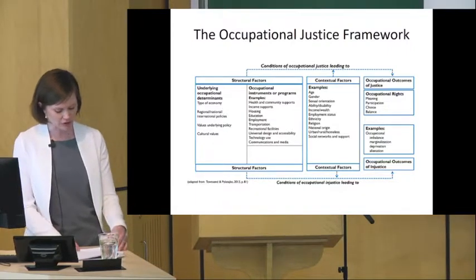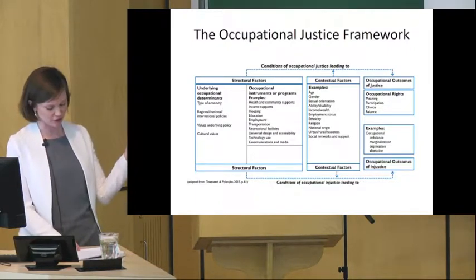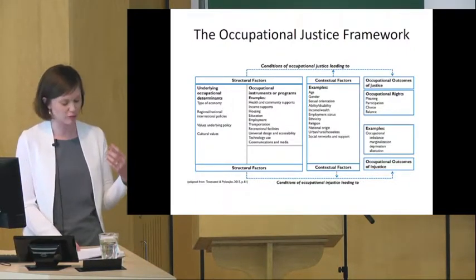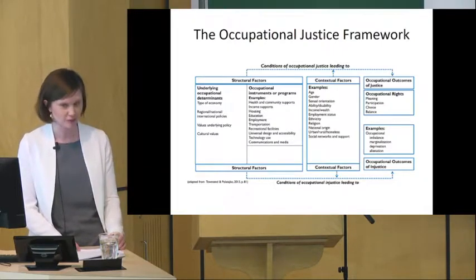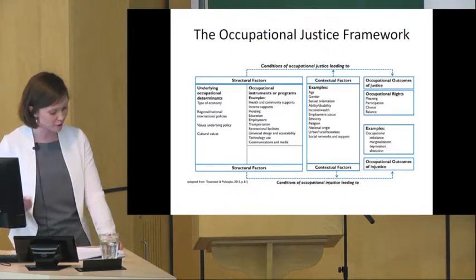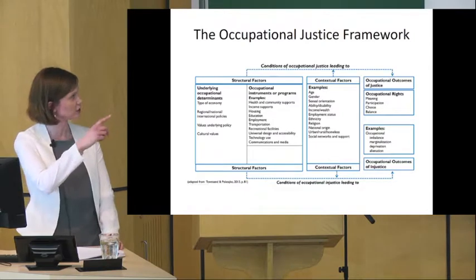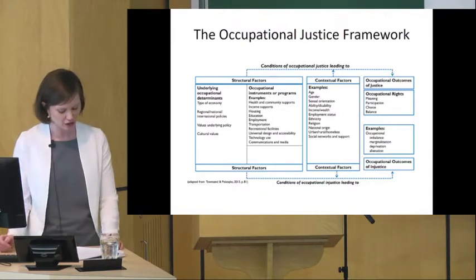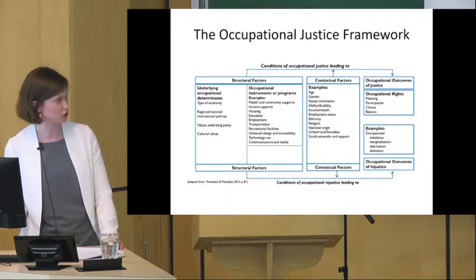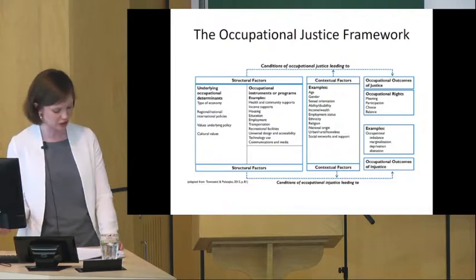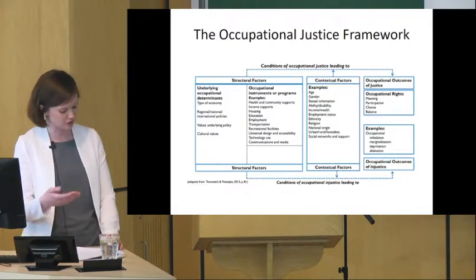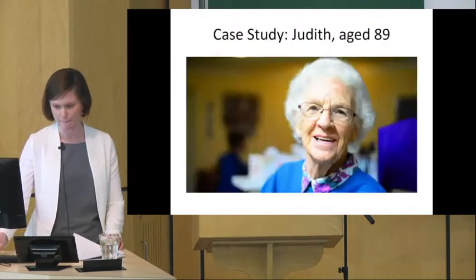Once these outcomes and factors have been identified, targeted strategies can be considered to address the injustices. In public health terms, looking at the examples under each factor, we can see factors that relate to the social determinants of health like housing, education and employment, as well as risk factors like age, gender and income.